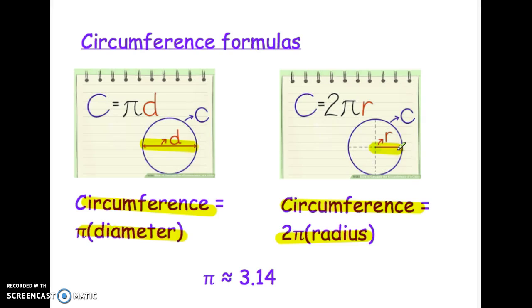You don't have to memorize them both. We usually will approximate π as about 3.14. I might ask you to use a different approximation or occasionally you'll use the π button on your calculator, but usually when I ask you to approximate π, you'll use 3.14.